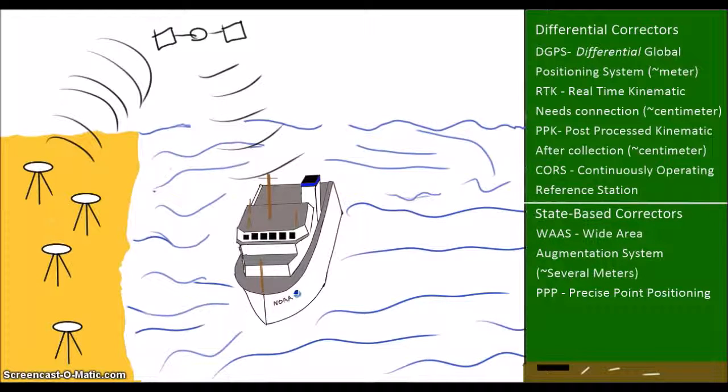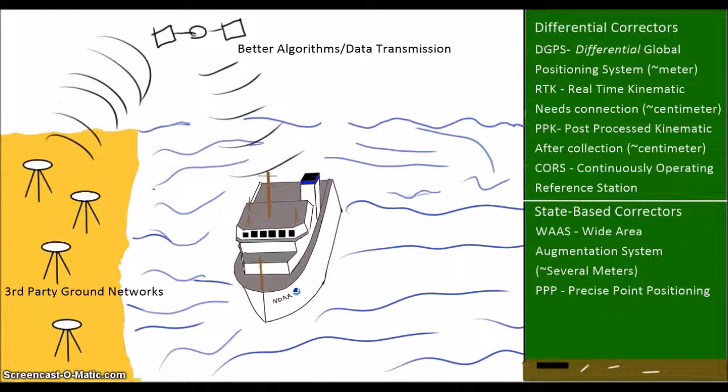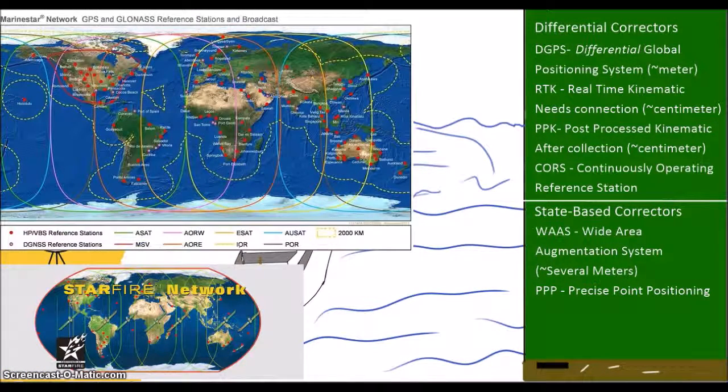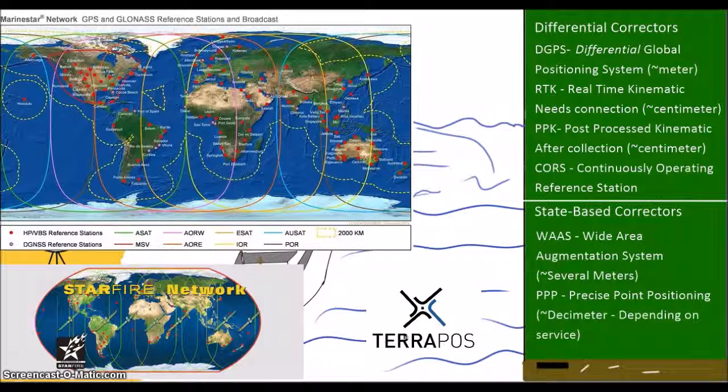Commercial outfits have also set up state-based corrector services. By investing in ground networks, improved state estimation algorithms, and data transmission options, these commercial services can provide improved positioning over wide areas. Starfire by John Deere, Omnistar and MarineStar by Fugro, and TerraStar by Novatel are all examples of commercial, real-time, state-based PPP solutions. These services now offer decimeter-level horizontal and vertical accuracy over wide areas.